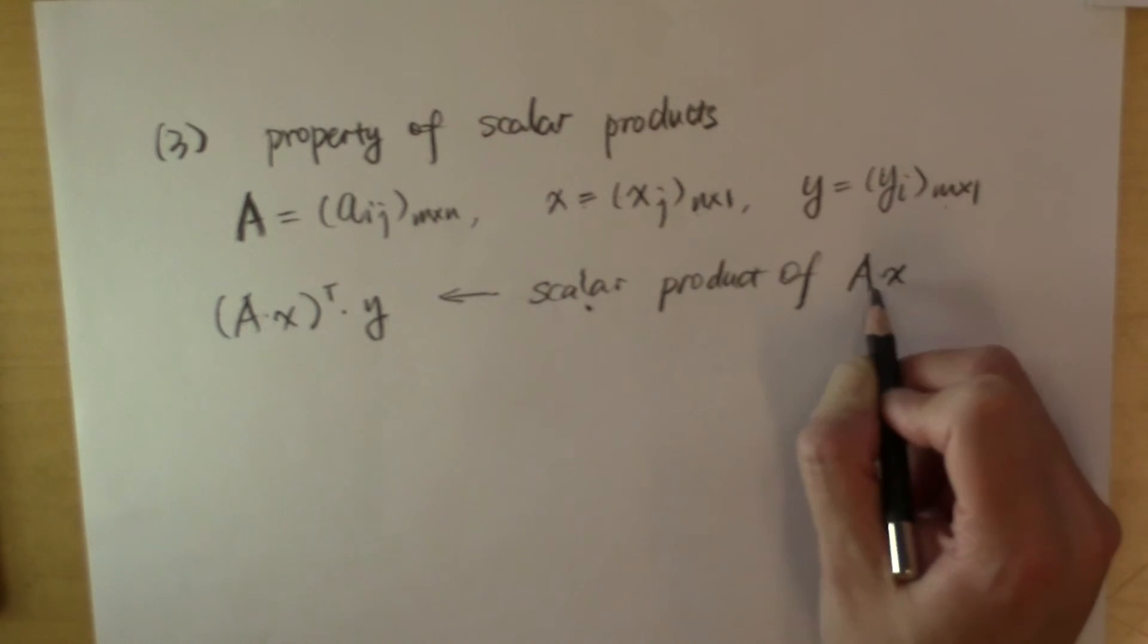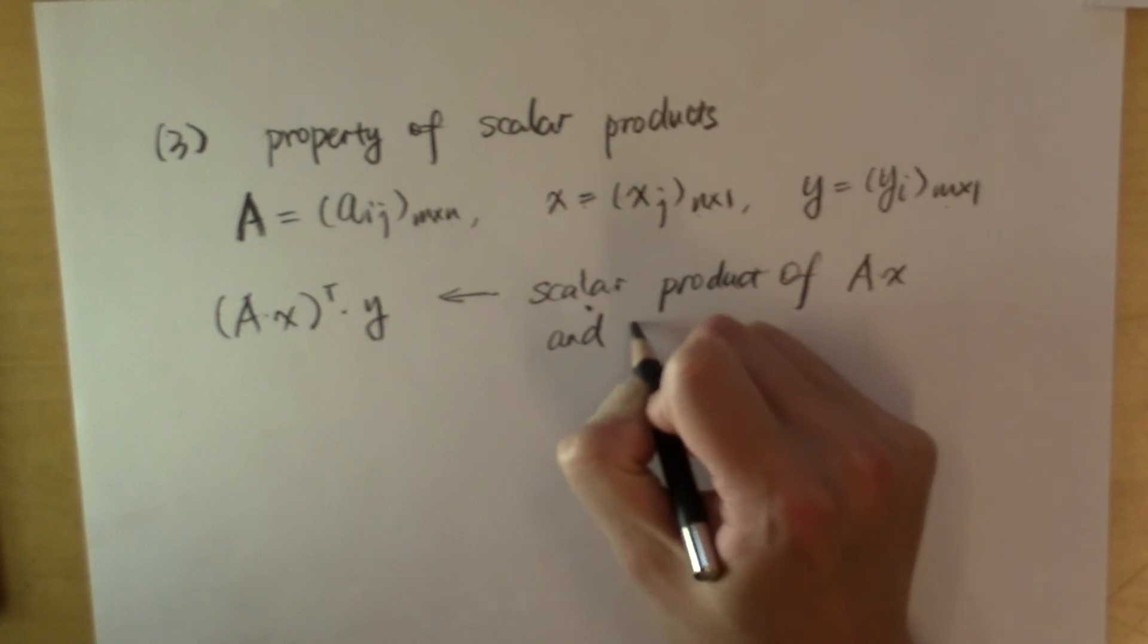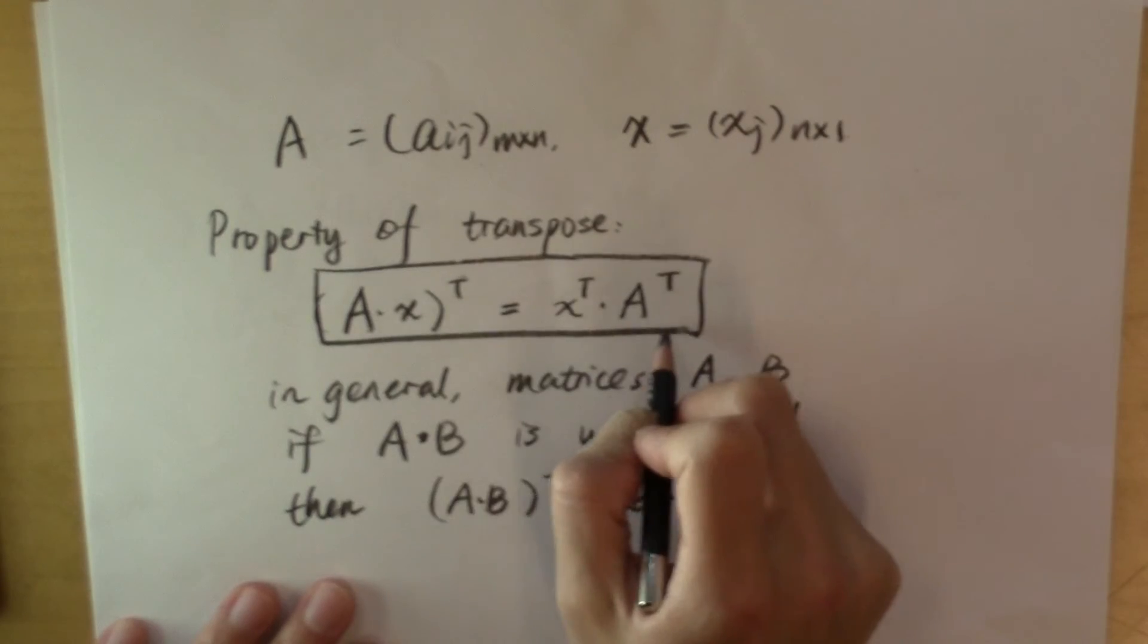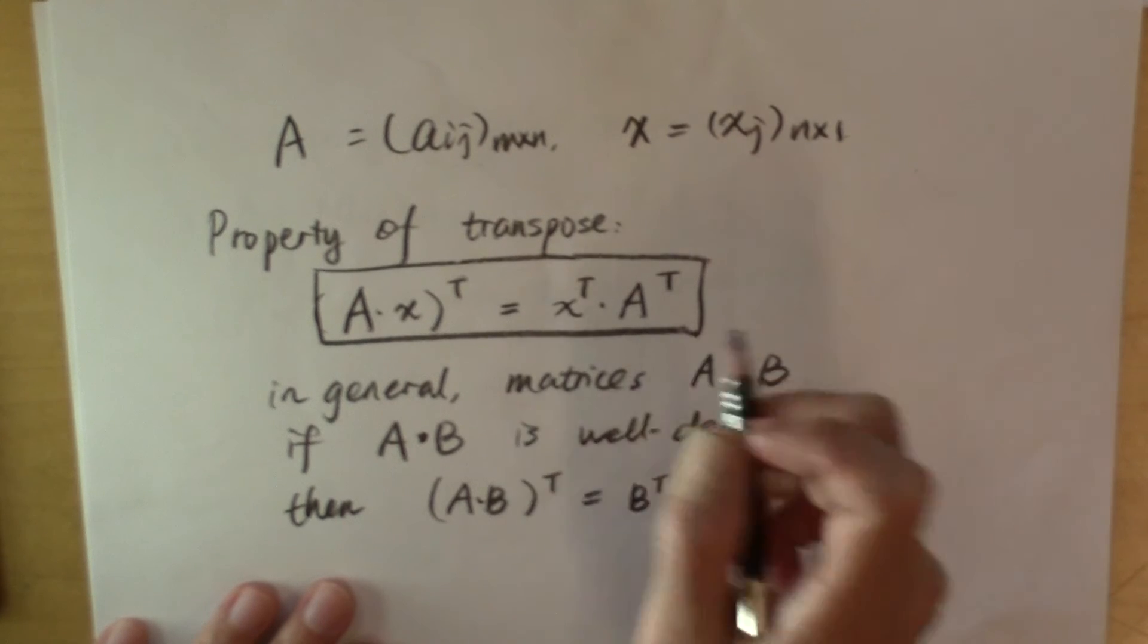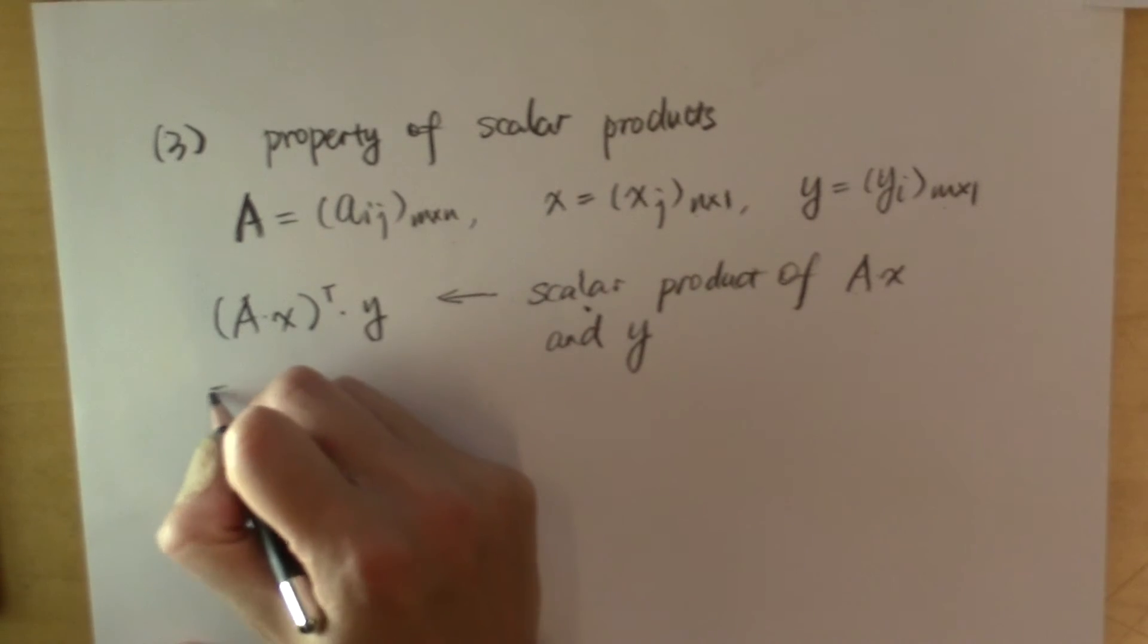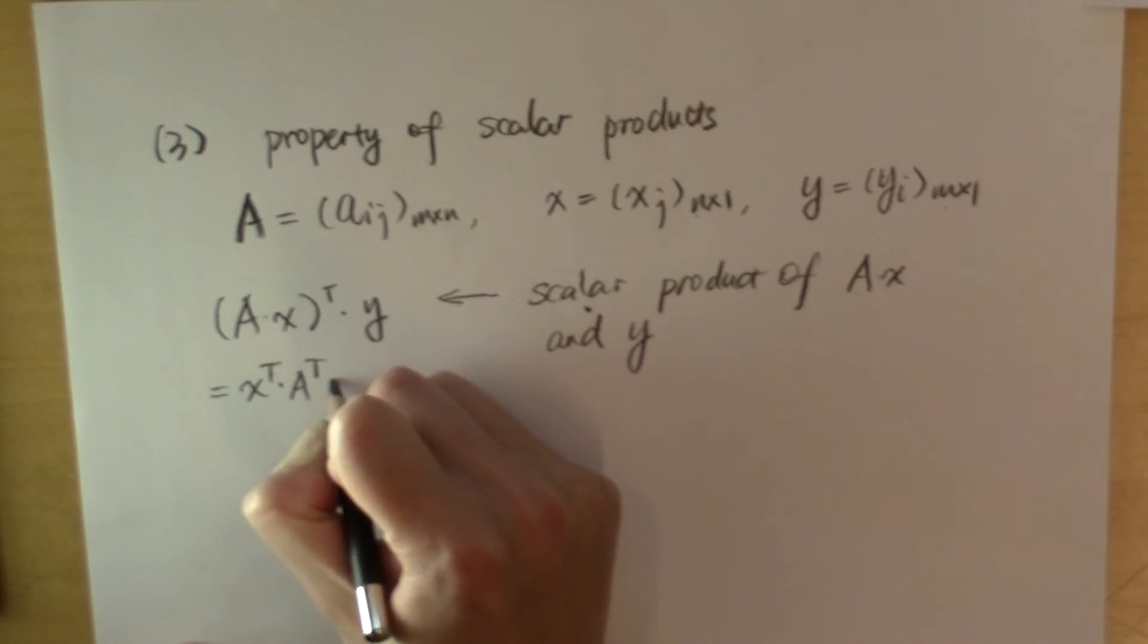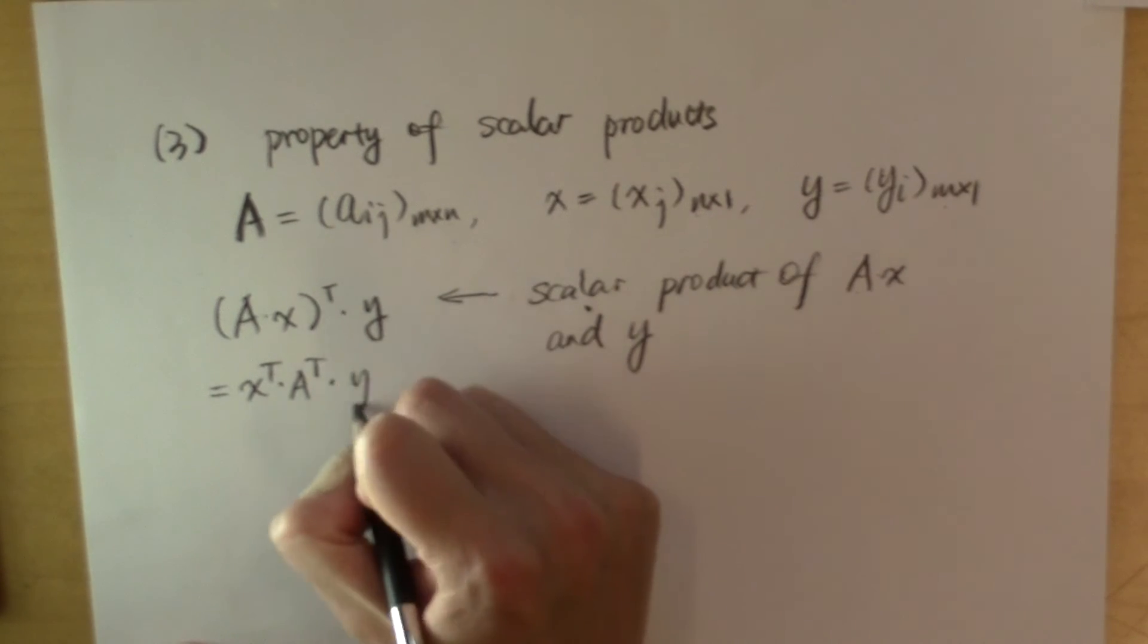Right, the vector is M by 1, which is the same dimension as vector Y, and therefore the scalar product is well defined. And because of this property that we just talked about, the transpose of A times X is X transpose times A transpose. And that multiplied by Y is this guy.